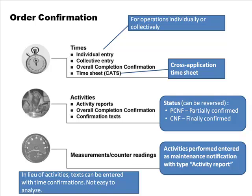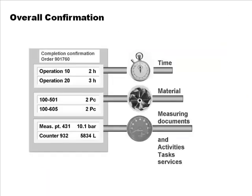Instead of confirming individual activities, text can be entered with time confirmations at the order level using the notification as an order, but then structured analysis and cost gathering gets lost. For overall confirmation, you can capture all pieces of information — technical details for every operation or all operations together, materials, measuring documents, and so on — all of this confirmation information can be entered at the time the order is confirmed.